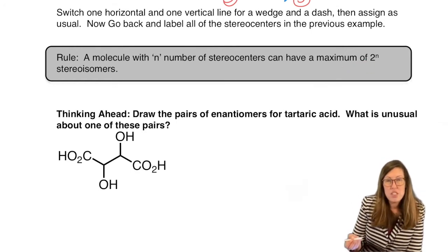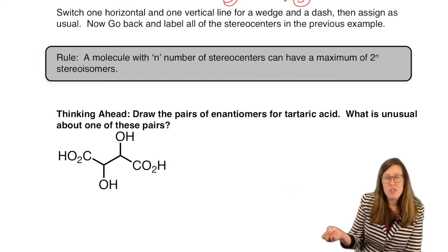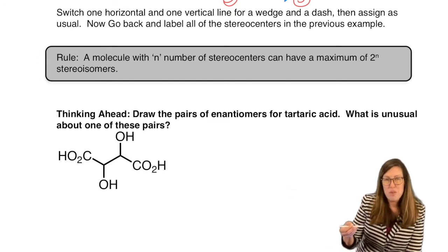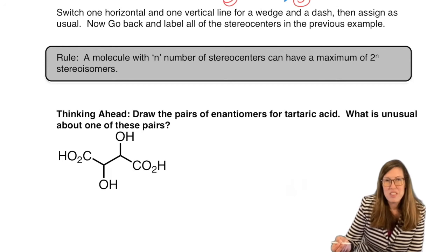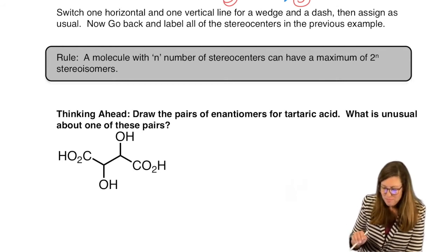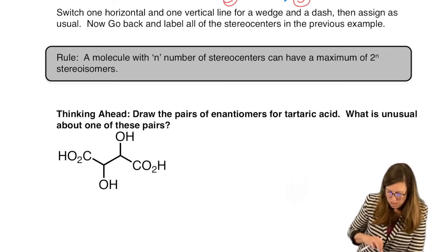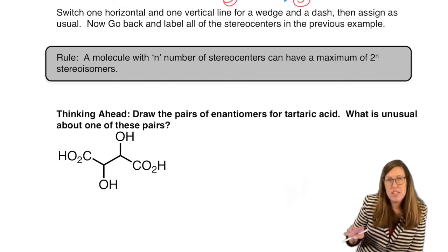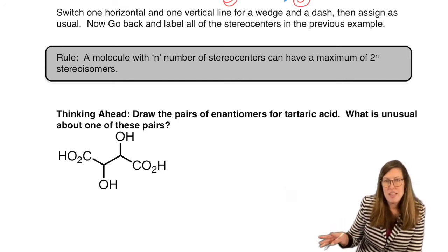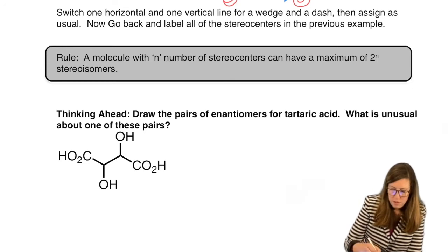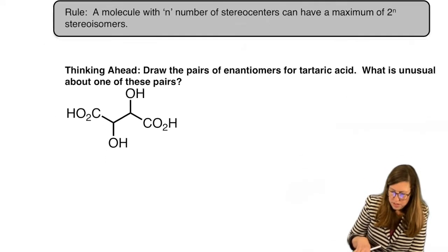But up to 2 to the N stereoisomers. So because we had 2, 2 to the 2 is 4, we had 4 possibles. So 3, it quickly goes up to 8. So I'll tell you about that exception where we don't reach that maximum, we don't always get that 8 or that 4. So let's do another example.